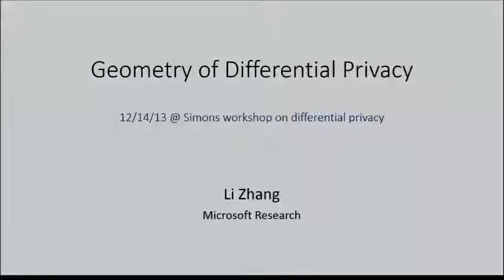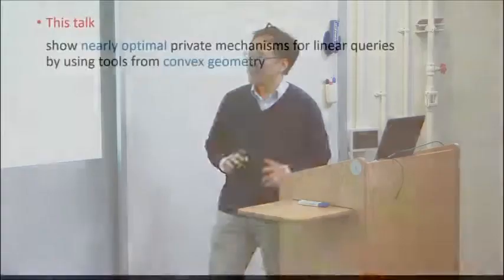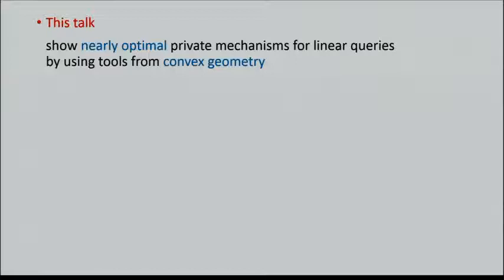My name is Li Zhang and I work at Microsoft Research. Today I'm going to describe some work in the geometry of differential privacy. I'm going to show nearly optimum private mechanisms for linear queries, using tools from geometry — more specifically, from convex geometry.